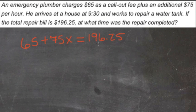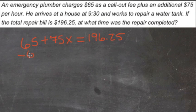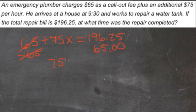Our formula is: $196.25 equals $65 plus $75x. To solve it, we need to first get rid of the $65. So we're going to subtract $65 from both sides. That gives us $75x equals $131.25.